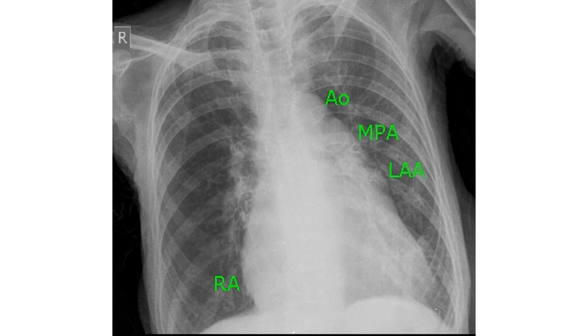A slight prominence of the right atrial contour along the right heart border is also seen. The right pulmonary artery is also slightly prominent in the right hilum.